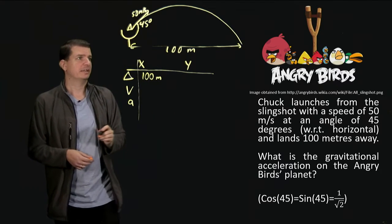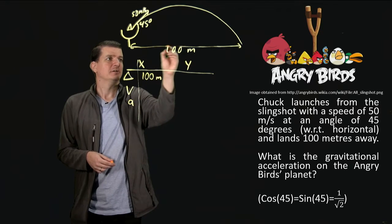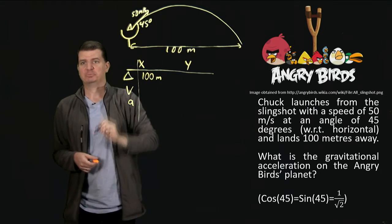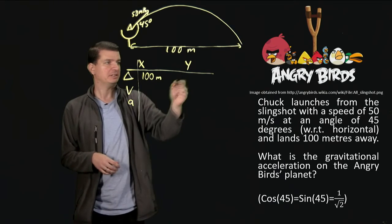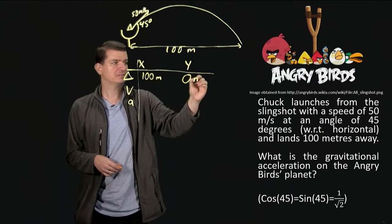In the y direction, on the other hand, well, there is this height of the slingshot by which we've fallen, but the slingshot's pretty small, so let's leave it out and just call it 0 meters to make life easy.